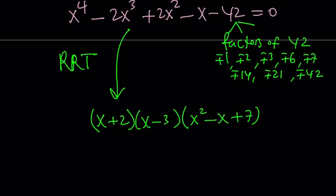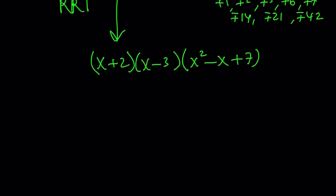The reason we write the third factor as a quadratic is because it's not factorable, and you're going to notice that it has non-real roots. So from here, if you set this equal to 0,